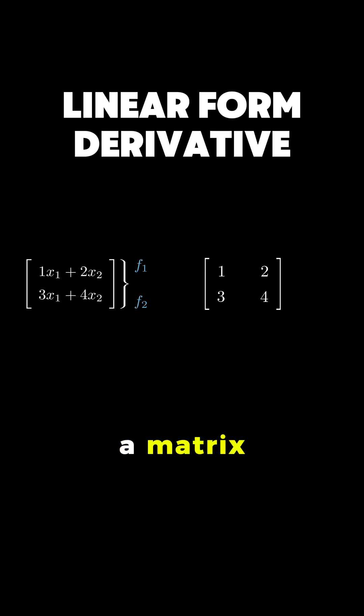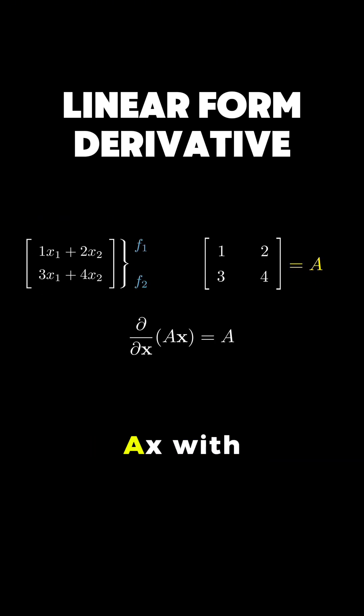Arranging these in a matrix, we recover exactly our original matrix A. This gives us our first key result: the derivative of AX with respect to X is simply A.